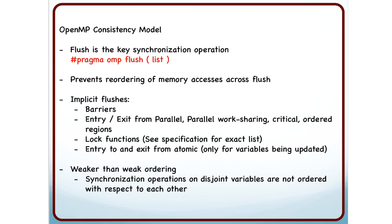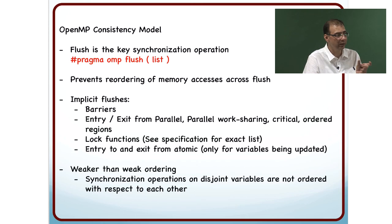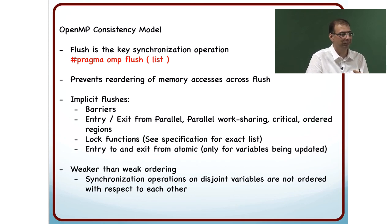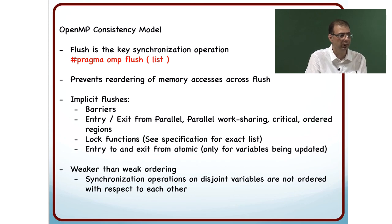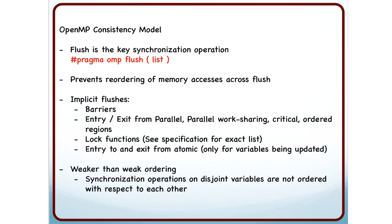There are a couple of reasons why the OpenMP consistency model is weaker than weak ordering. One is that synchronization operations on disjoint variables are not ordered with respect to each other — flush A did not ensure anything about memory accesses to B; they can still cross that flush boundary. That is one way OpenMP is weaker than weak ordering.